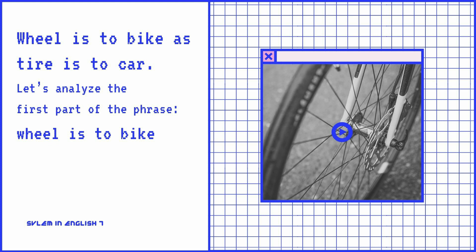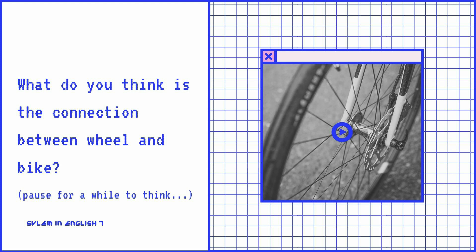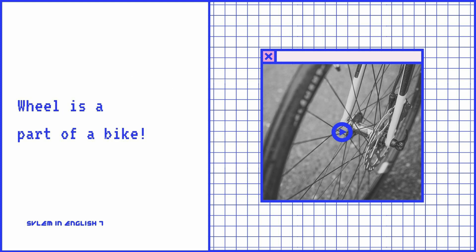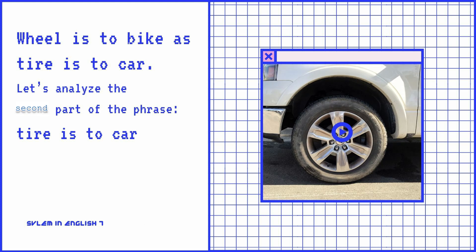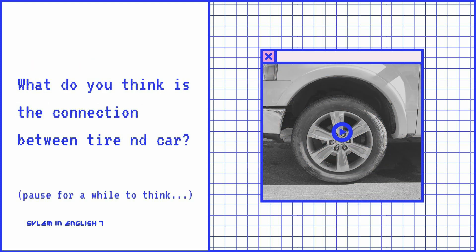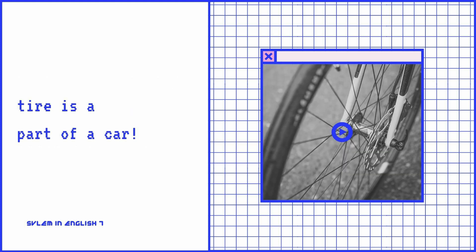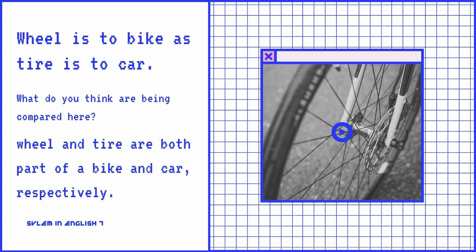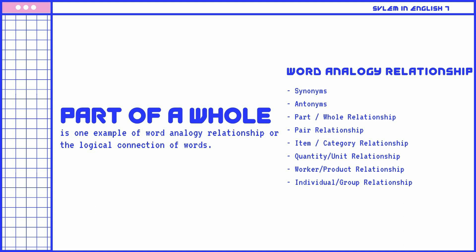Let's analyze the first part of the phrase: Wheel is to bike. What is the connection between wheel and bike? Awesome! Wheel is a part of a bike. Now let's analyze the second part: Tire is to car. What is the connection between tire and car? Perfect! Tire is a part of a car. This means that the comparison being made — wheel is to bike as tire is to car — is that both represent a part-to-whole relationship. Part-of-a-whole is one example of word analogy relationship, or the logical connection of words.